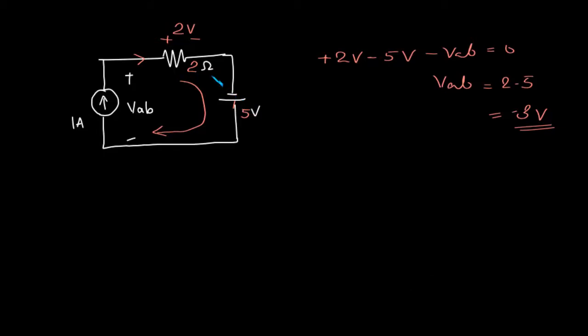Last time I did it with 5 ohm here and 2 volts here, and we got a positive potential across AB. The actual GATE question is this.